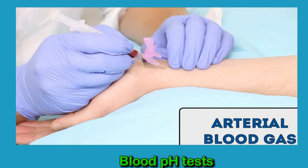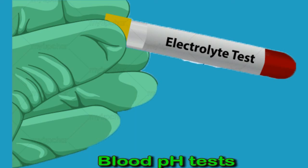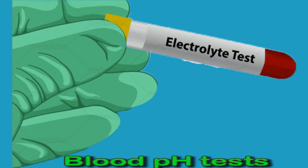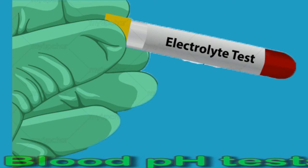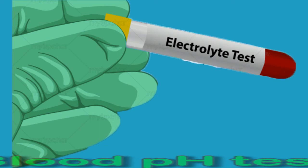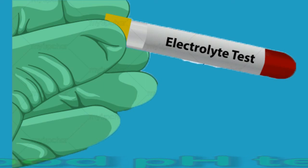Arterial blood gas tests often take place in hospital. They measure the acidity, oxygen, and carbon dioxide levels of the blood. A doctor will remove a small amount of blood, often from the wrist, and send the sample to a laboratory for analysis. Electrolyte tests may be part of routine care, or a doctor may perform them when a person becomes seriously ill. The test measures levels of salts and minerals such as bicarbonate present in the blood. The results can help a doctor determine what is causing certain symptoms and whether the body's regulatory systems are working properly.